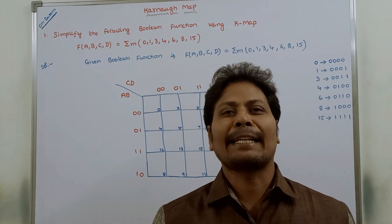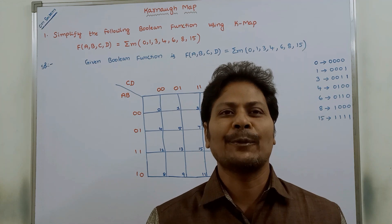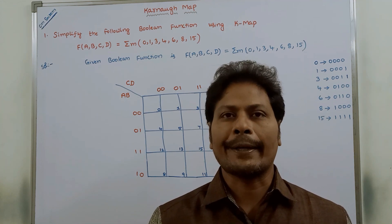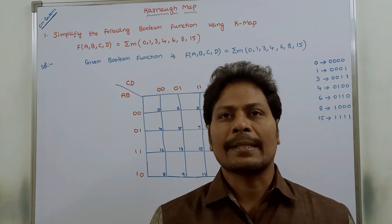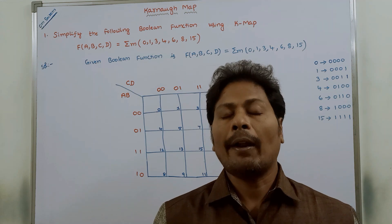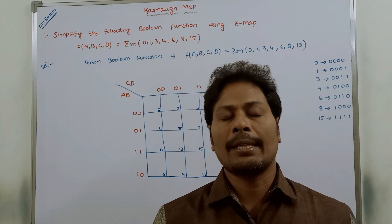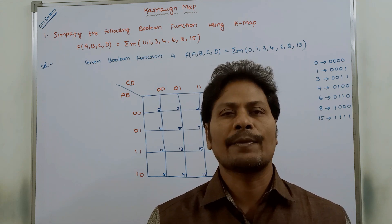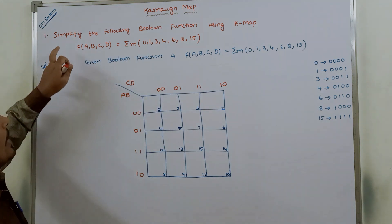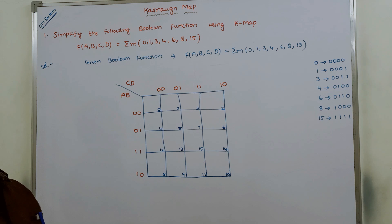Hi friends, welcome back to our YouTube channel. Today we have to discuss an example problem on Karnaugh map. It is a somewhat critical and difficult example problem on Karnaugh map in digital electronics, digital logic design, and switching theory and logic design courses. The given problem is: simplify the following Boolean function using K-map.